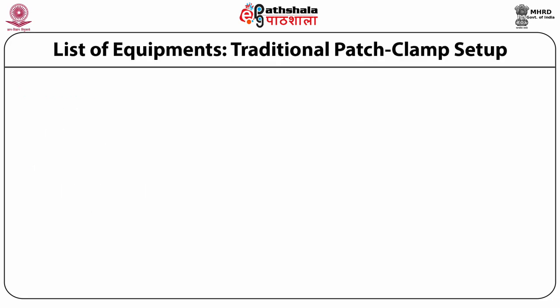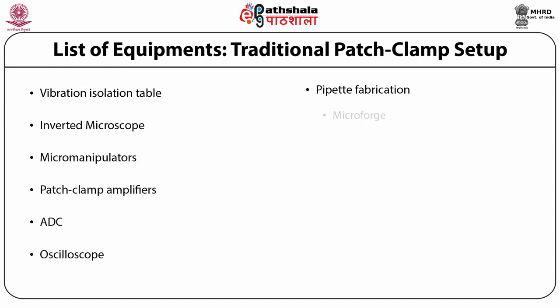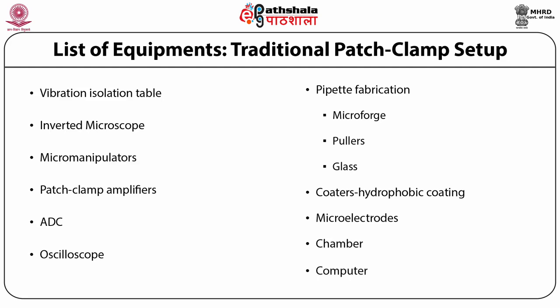Before performing the patch clamp experiment, we need a lot of equipment — a patch clamp setup. For this setup, first a vibration-free or vibration isolation table is required, an inverted microscope, micro manipulators, patch clamp amplifiers, analog-to-digital converter, oscilloscope, and pipette fabrication equipment. For that we need micro pipettes for hydrophobic coatings, micro electrodes, chambers, and computers. These are the requirements to perform patch clamp recording.